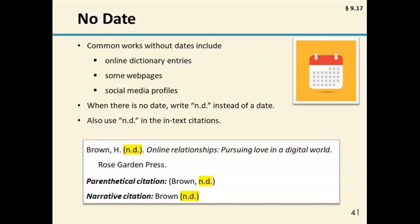Sometimes it's the publication date of a work that is unknown or cannot be determined. Common works without dates are online dictionary entries, some web pages, and social media profiles. For works with no date, write the letters n.d. — which stands for no date — in parentheses as the second element of the reference entry, with a period after the n and after the d with no space between those letters, in parentheses and followed by a period. The date also appears as n.d. in the corresponding in-text citation, and in your reference list, references with no date will be listed before references with a date.